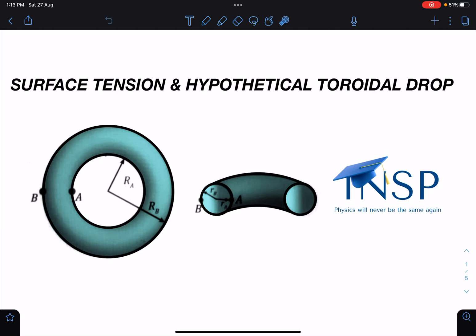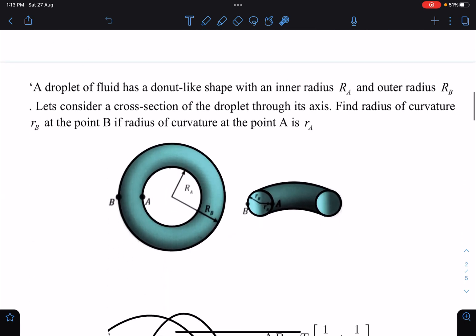Hello everyone, welcome to my channel Indian School of Physics. This is Nitin here, and today I have come with a very amazing problem on surface tension. It is surface tension and a hypothetical toroidal drop. This question I discussed in my class long back, and I thought I'll give this question here also. Here is the problem.